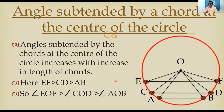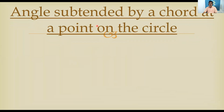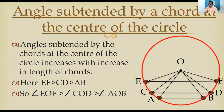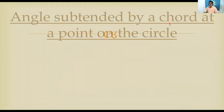Now let us move to the next concept: angle subtended by a chord at a point on the circle. The previous concept was angle subtended at the center — this new one is at a point on the circle, not at the center. Let us observe.